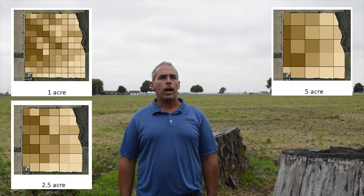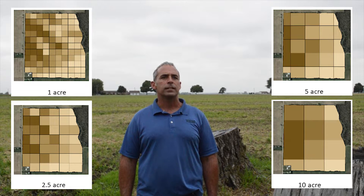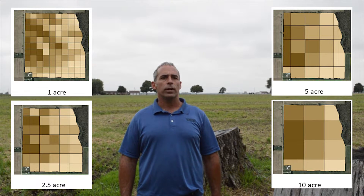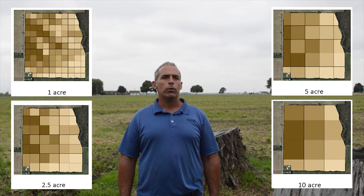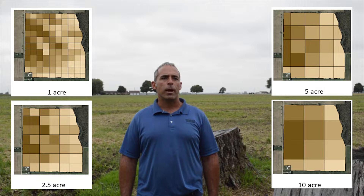Growers can choose a one acre, two and a half, five, or even a ten acre grid package based on the intensity they would like to sample the field at. The more intensive the grid, the more data can be extracted, allowing for more detail and precision in the resulting maps and recommendations. Two and a half acre grid sampling has become the most common type, but a five or ten acre grid can also be effective. Grid mapping is your start to being able to identify soil variability in your fields.